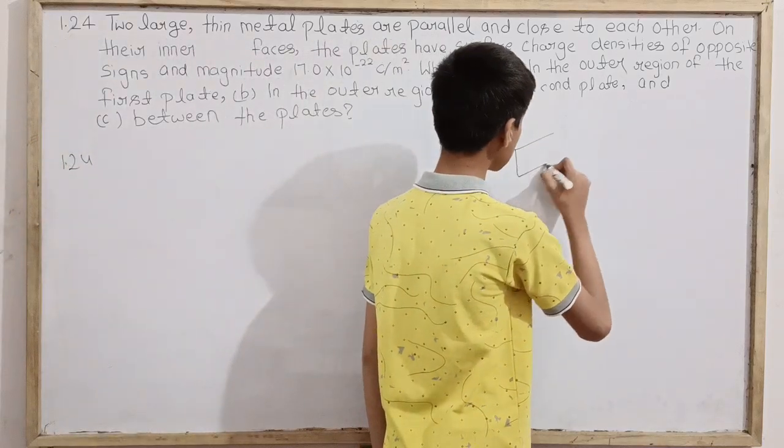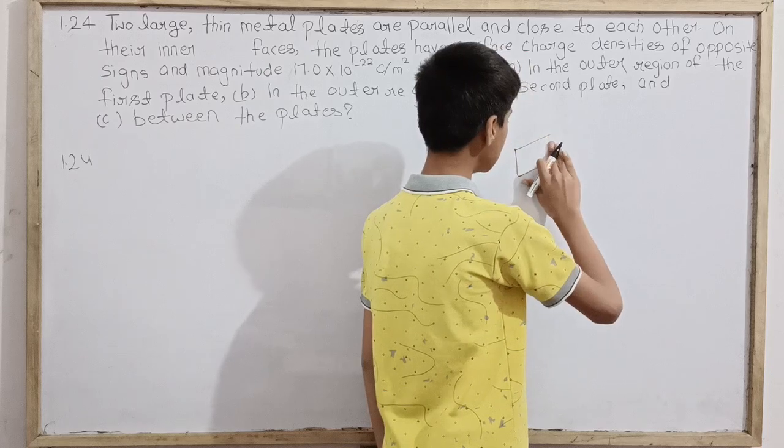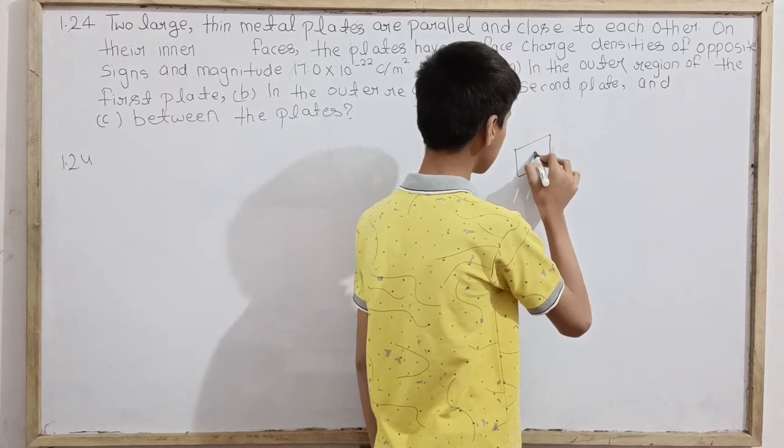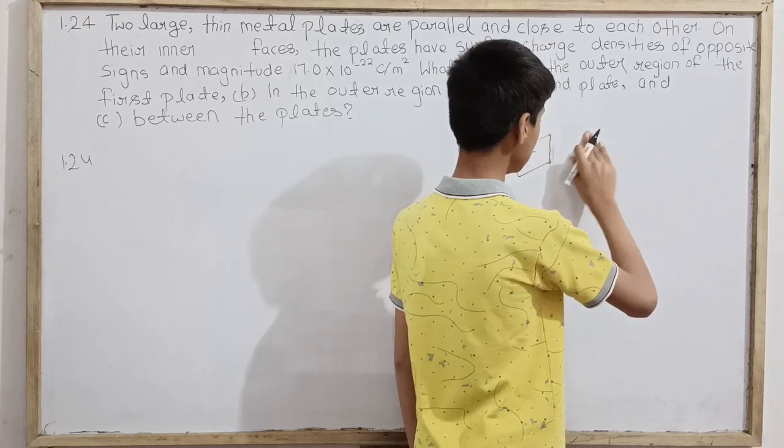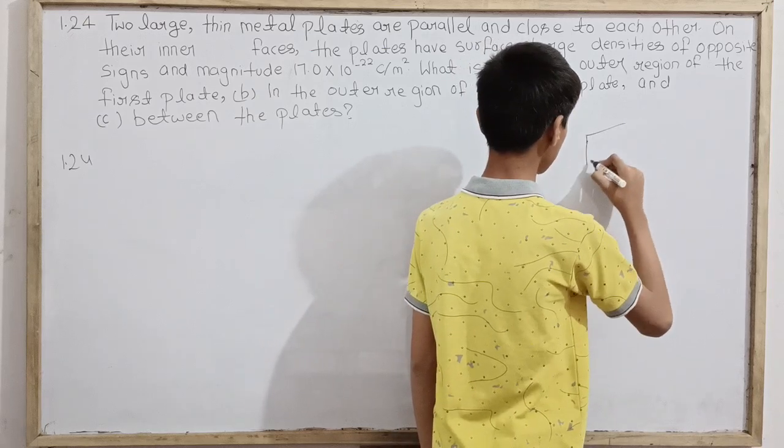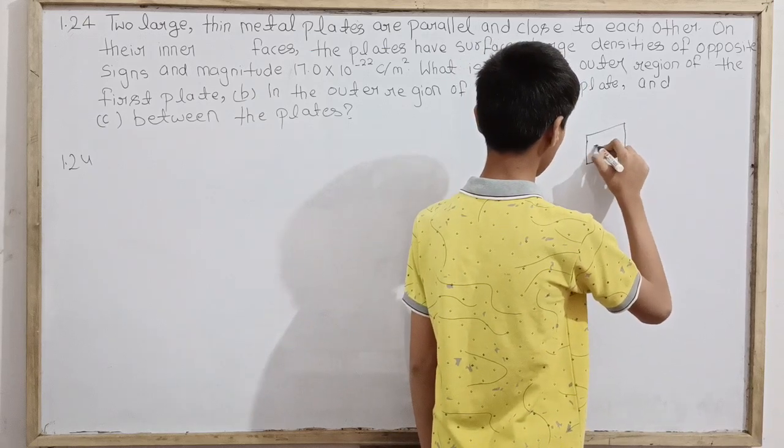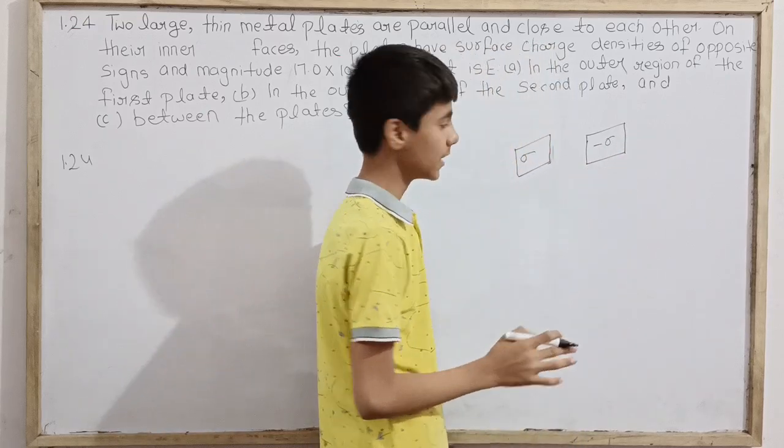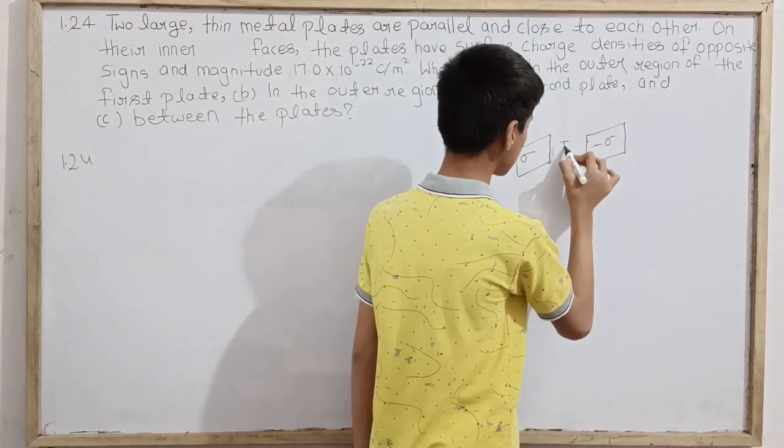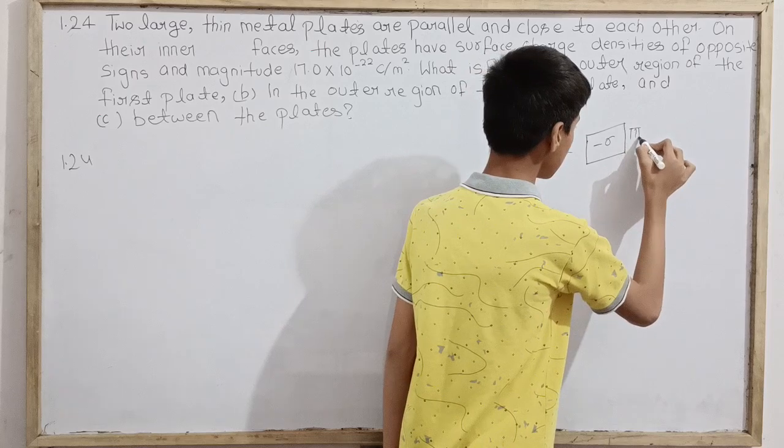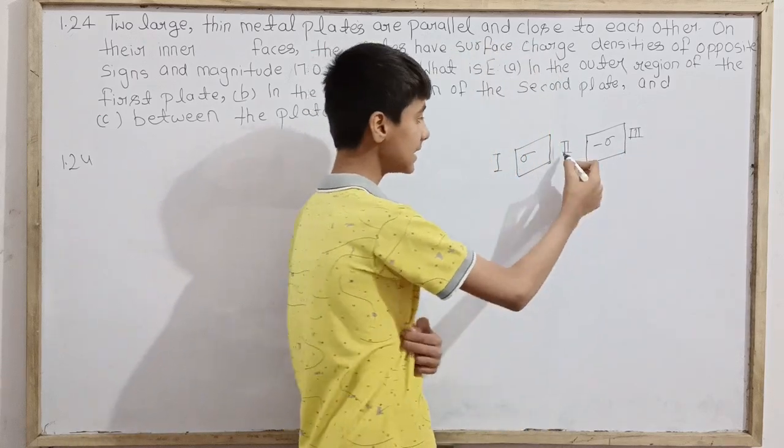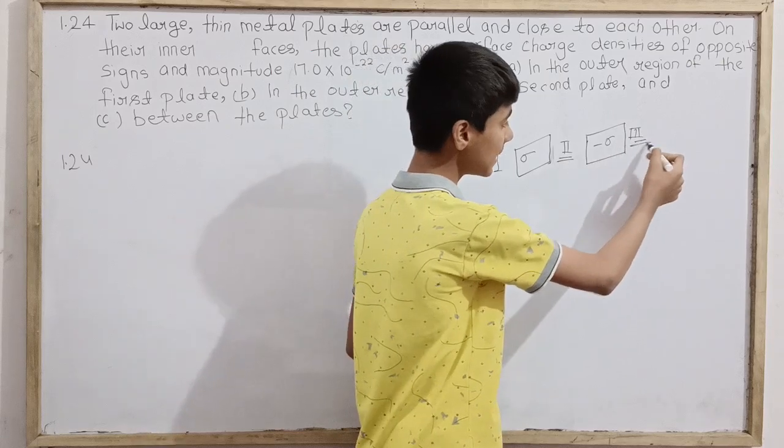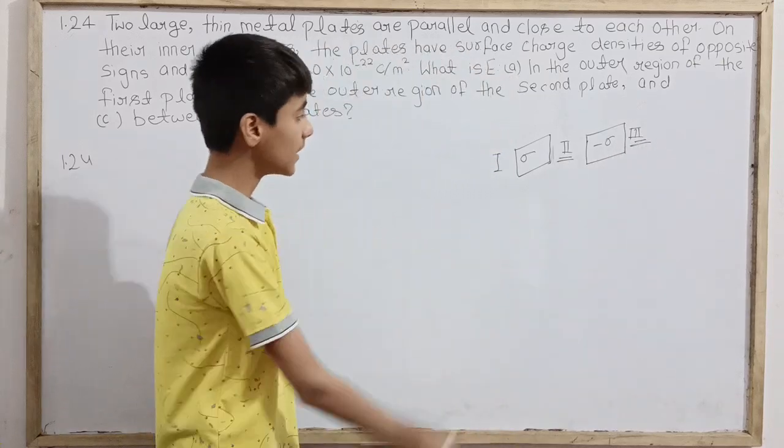Here are two large thin plates given. One has surface charge density sigma, the other has negative sigma. The value is given, so no need to worry. Now we have three regions: one is the outer region of the first plate, the second is between the plates, and the third is the outer region of the second plate.